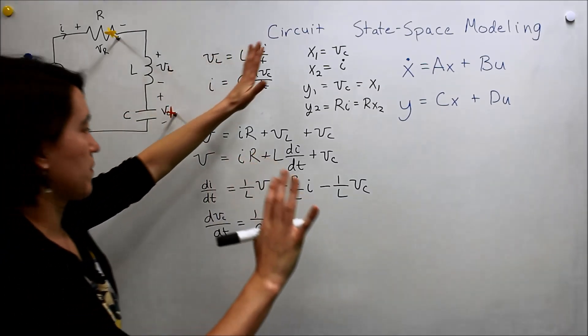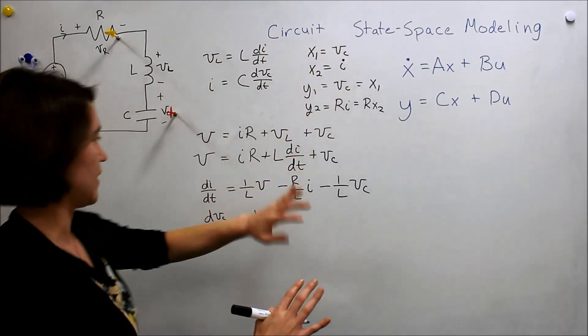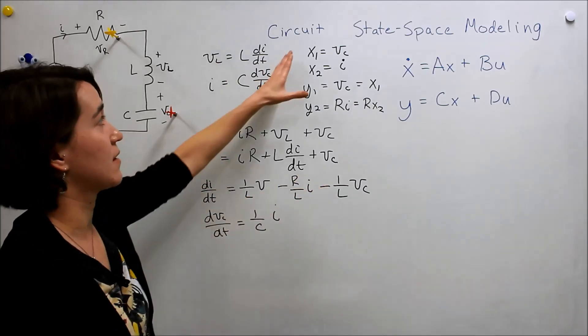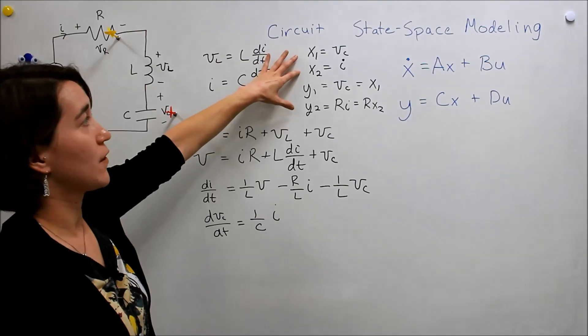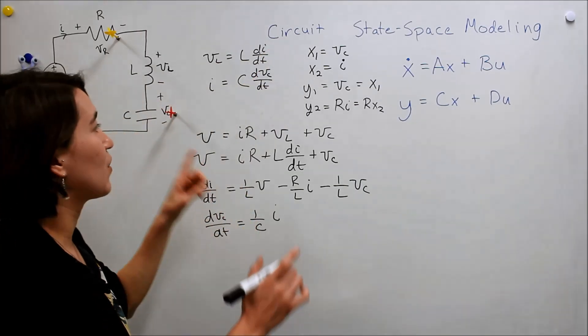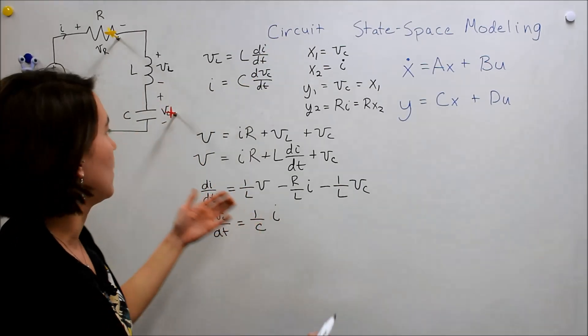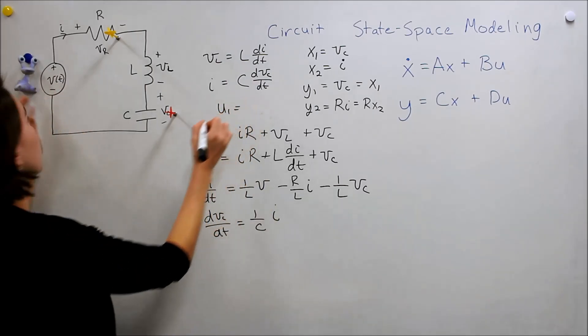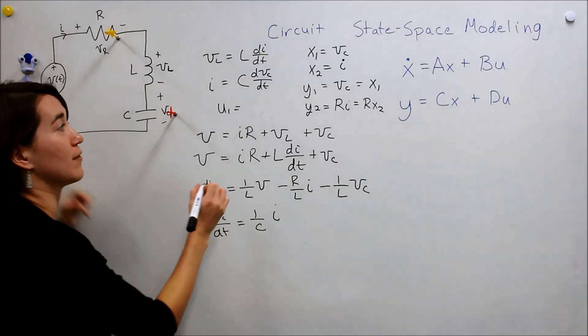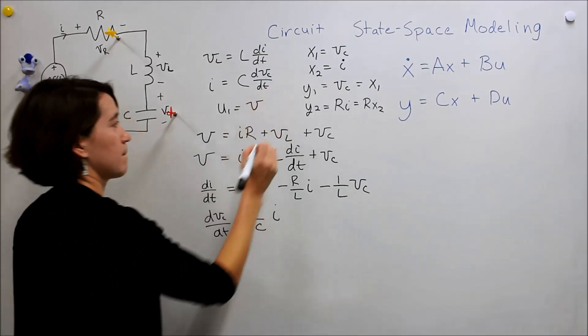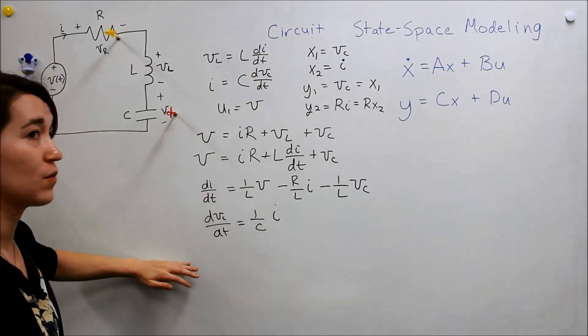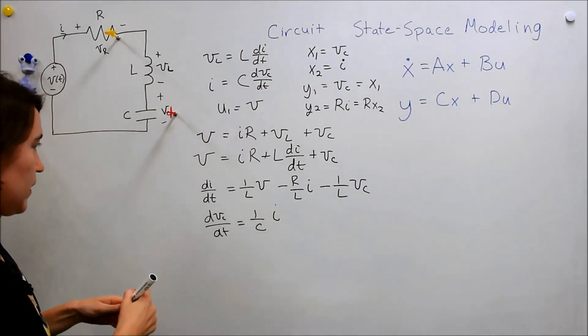So now let's transform some of these. Instead of using our I and V and all that notation, let's put X1, X2. We forgot to write something down. We also need to know the input. So our input U1 is equal to V. Valerie is controlling our input at the voltage. So now we have everything defined, and now we can replace these two equations with our state space.